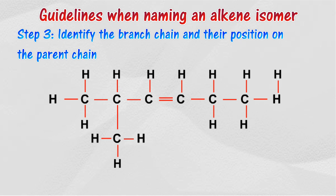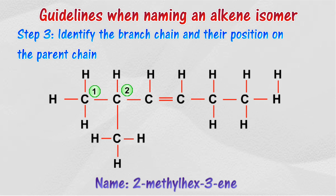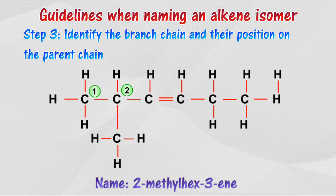Step 3: Identify the branch chain and its position on the parent chain. The type of branch chain is one methyl group, and its position is at the second carbon atom.